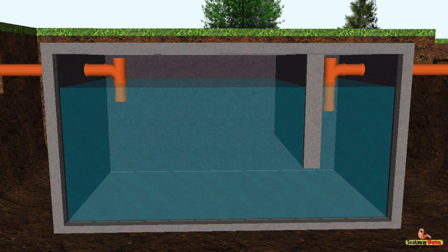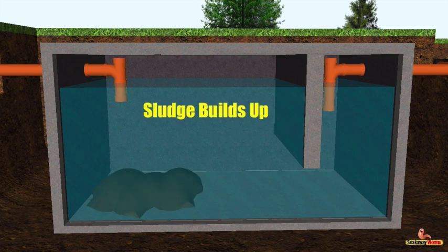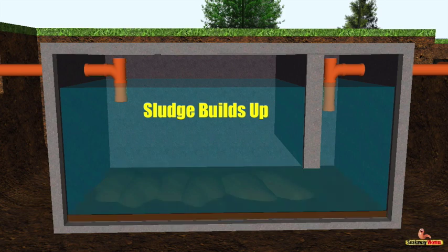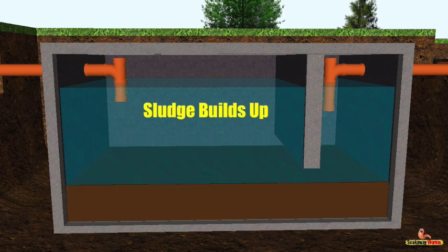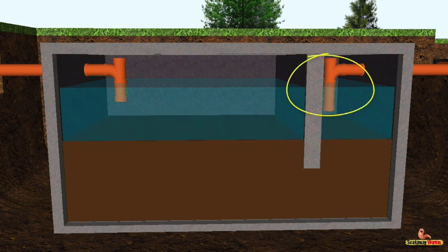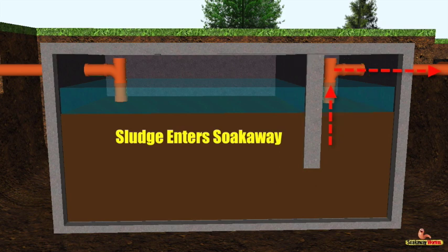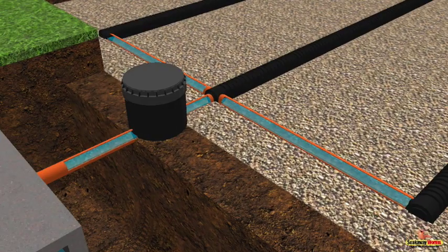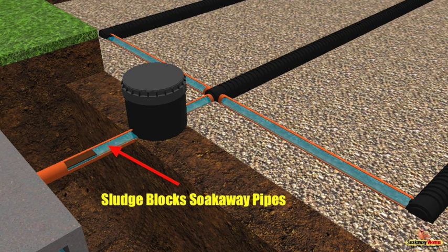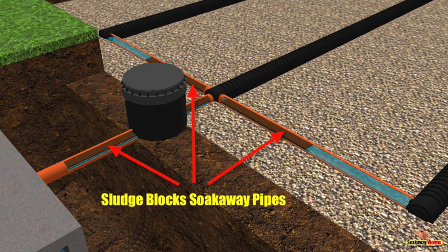So why does a septic tank and soak away become blocked? Well, the biggest problem is sludge. The sludge is made up of fat and grease. Over time, this sludge builds up from the bottom of the tank and rises upwards. In time, this sludge reaches the outlet pipe, and once it does so, the sludge then makes its way from the septic tank towards the soak away pipes.